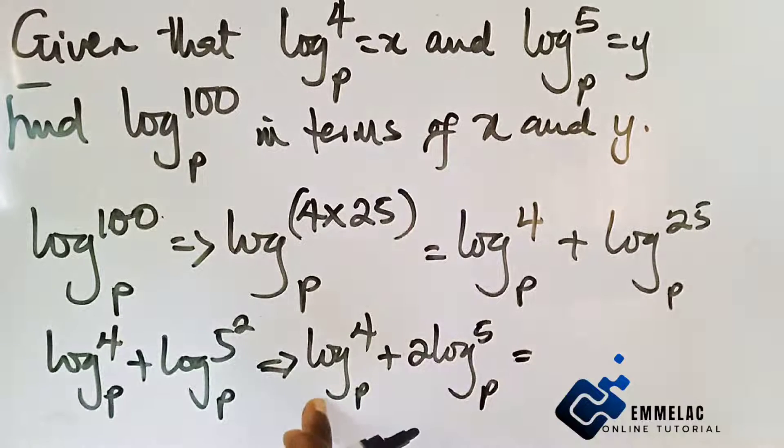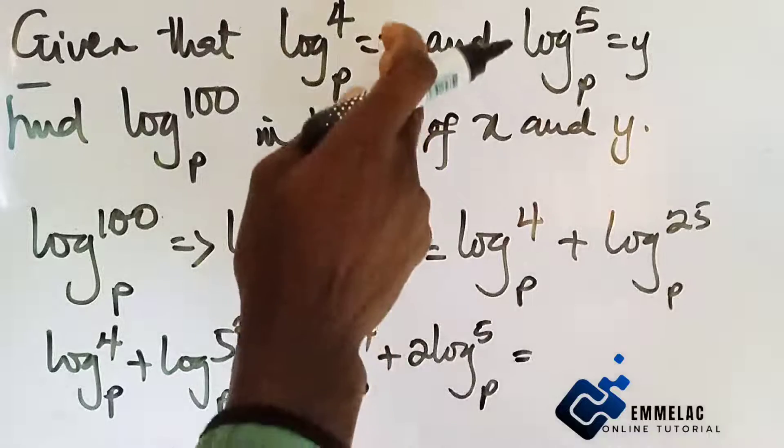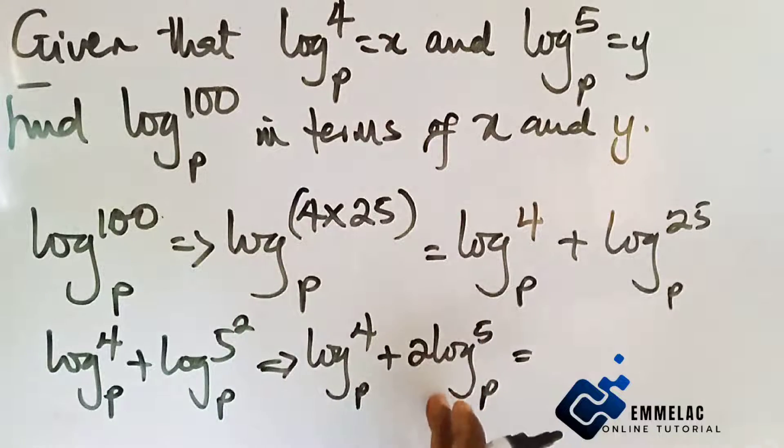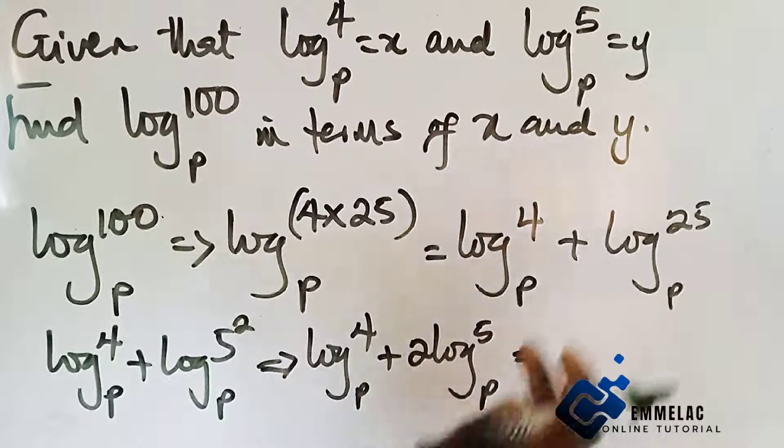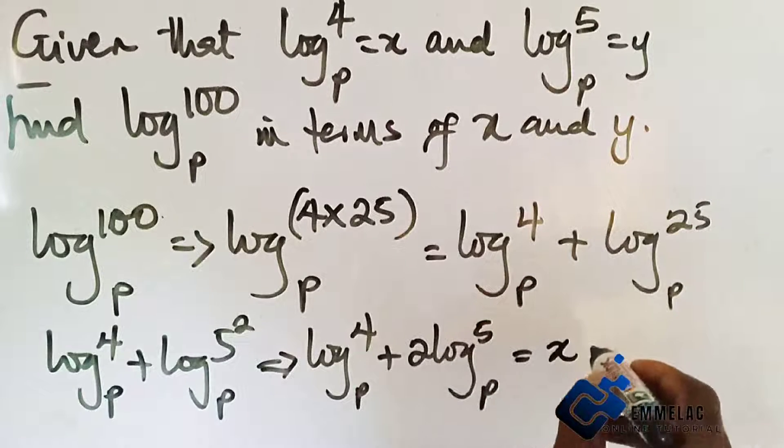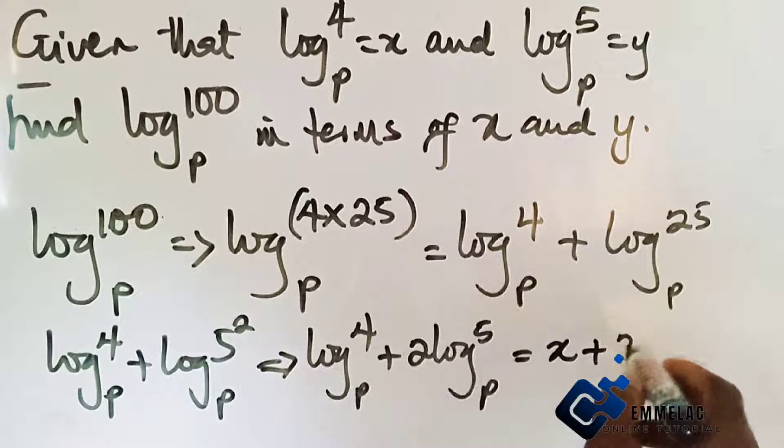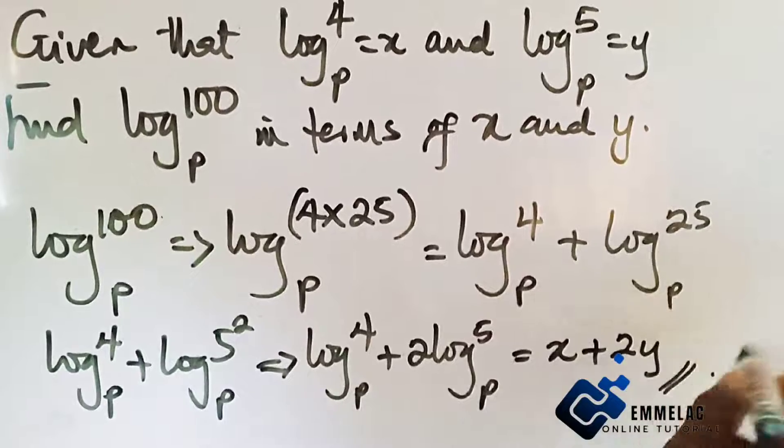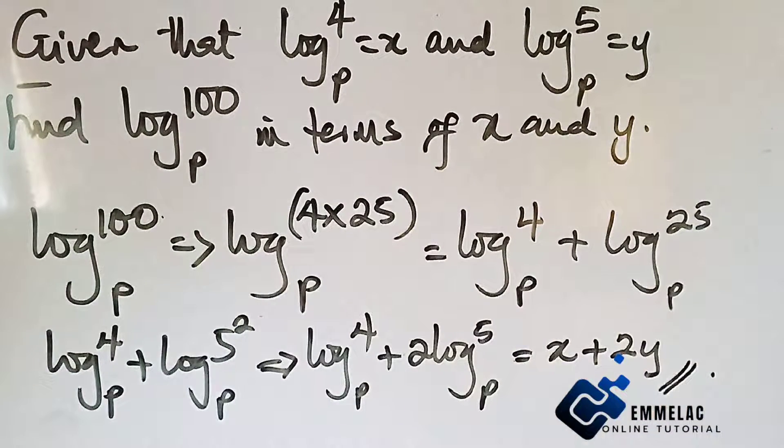In essence, replacing log base p of 4 for x and replacing log base p of 5 for y, we have x plus 2y. Final answer, simple and short.